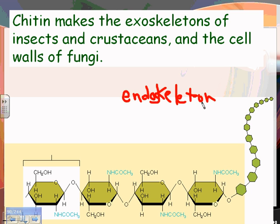An endoskeleton is a skeleton found inside the body — your bones are an endoskeleton. 'Exo' means outside, so an exoskeleton is a skeleton found on the outside, like the crunchy outer part of insects or crustaceans like lobsters and crabs. Chitin is also found in the cell walls of fungi.